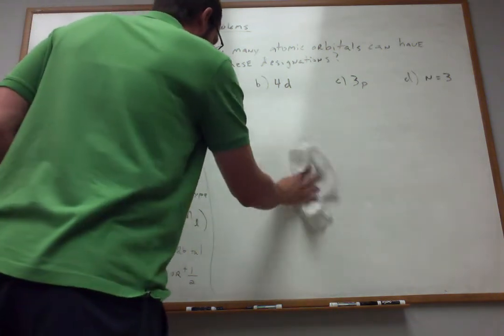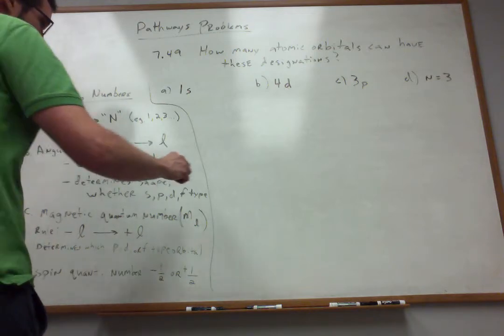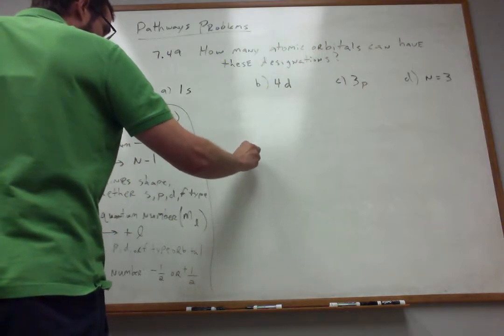So there were three P orbitals that we could possibly talk about. Now, how is this consistent with the assignment of these quantum numbers? Well, let's think about this for a second. For the P-type atomic orbital, what is L equal to?